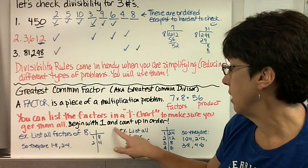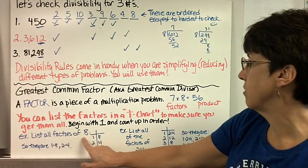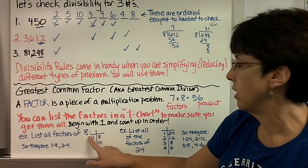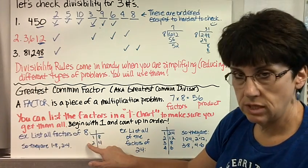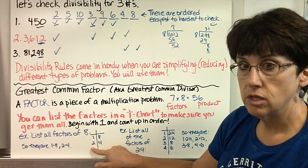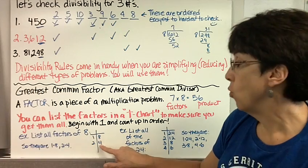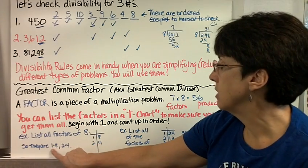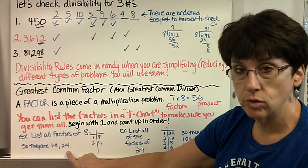You can list the factors in a t-chart to make sure you get them all. You begin with 1 and then count up in order. For example, list all the factors of 8. So I make a t-chart. I start with 1, and I just go down the side. 1 times 8. What's after 1? 2. 2 times 4. Does 3 go into 8? No. Does 4? Yes. But I already have it written down, so I don't have to write it again. Once I get to a number that's on the other side, I'm done. So the factors of 8 are 1, 8, 2, and 4.